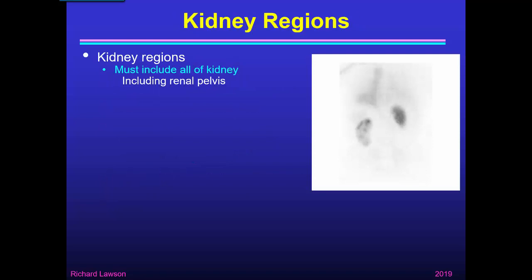The kidney regions must obviously include all of each kidney, and that includes the renal pelvis. That's because the renogram curve is intended not just to show uptake of radiopharmaceutical into the kidney, but also its elimination into the bladder. The renal pelvis forms part of the collecting system for urine in the kidney, so in most cases we're interested in how long it takes for radiopharmaceutical to pass through the whole kidney, including the renal pelvis.